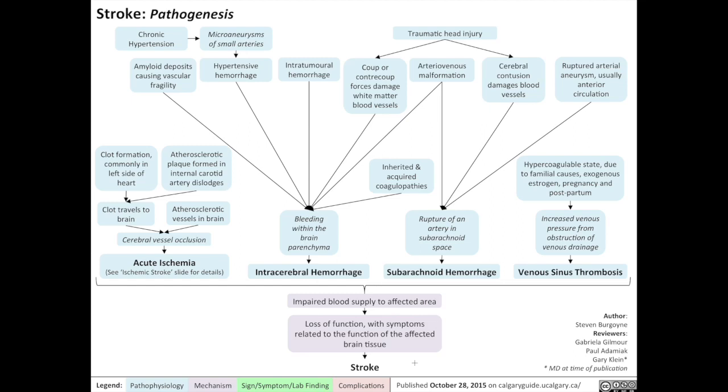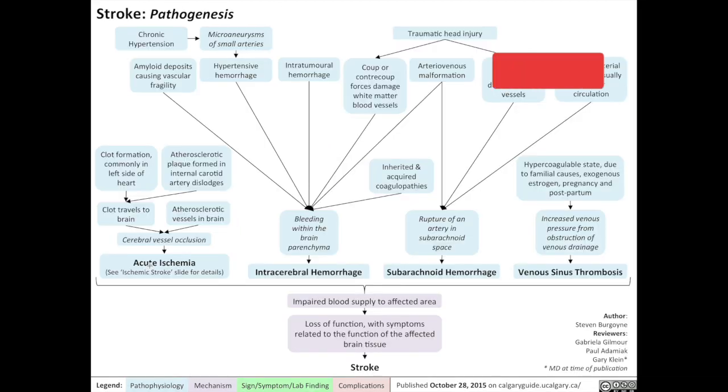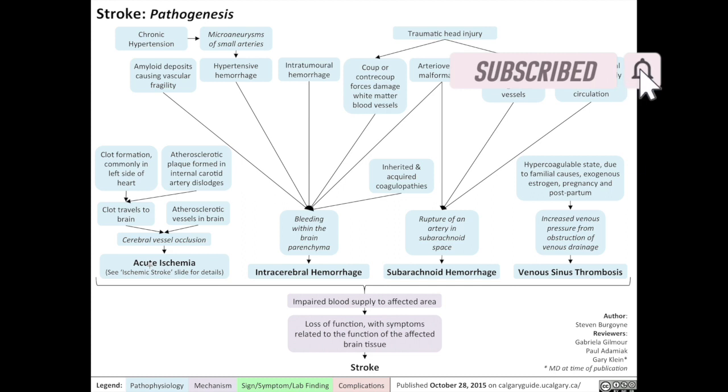Welcome back to the Calgary Guide video series. Today we're going to be talking about stroke and its pathogenesis. Note that there are four main types of stroke and that I will also be presenting a slide on the pathogenesis of acute ischemic stroke later on in this video, so stay tuned for that. But first, please consider supporting us in this non-profit work to improve medical education by liking this video just as it's starting out and by subscribing to my channel. And with that, let's get started.